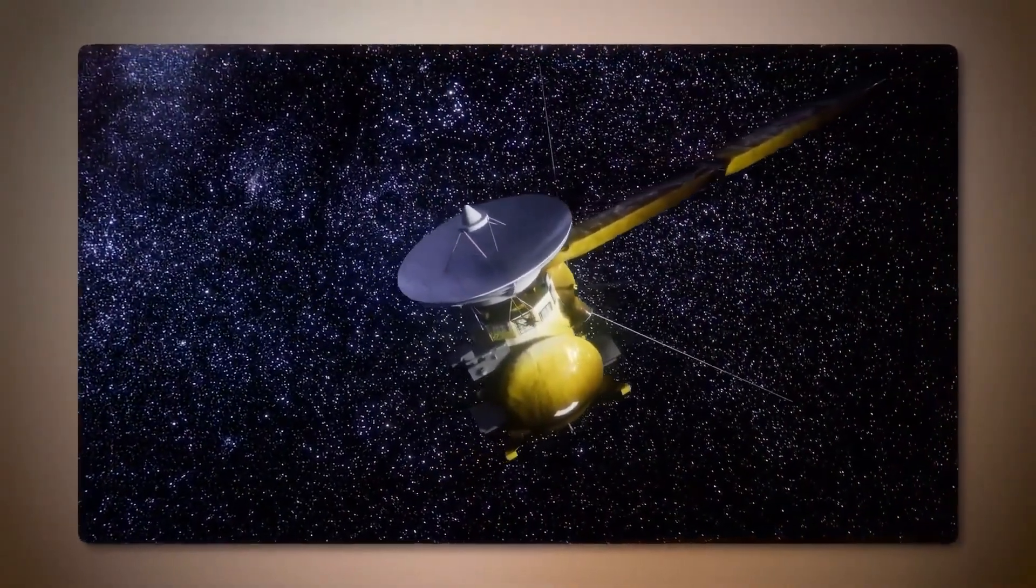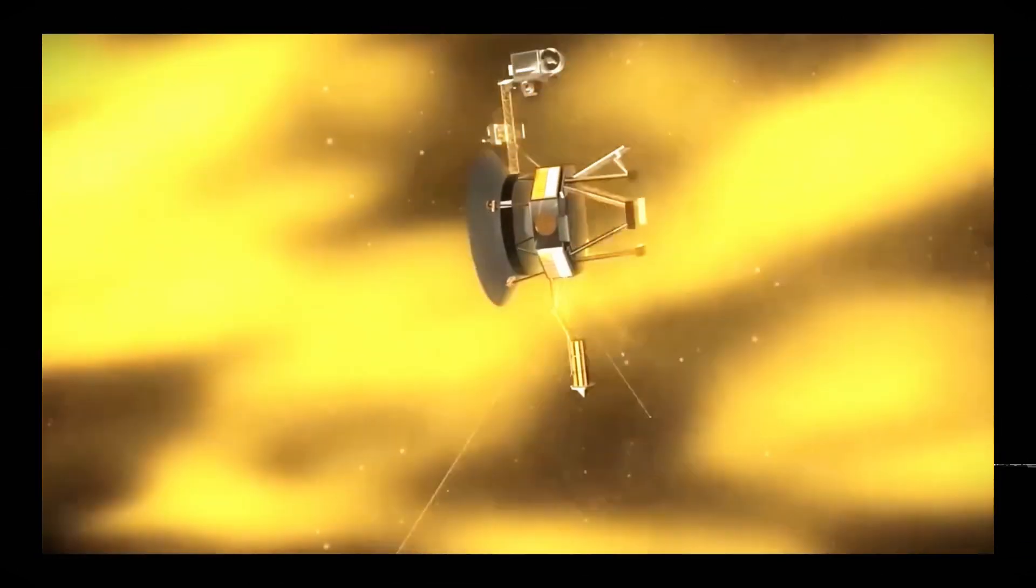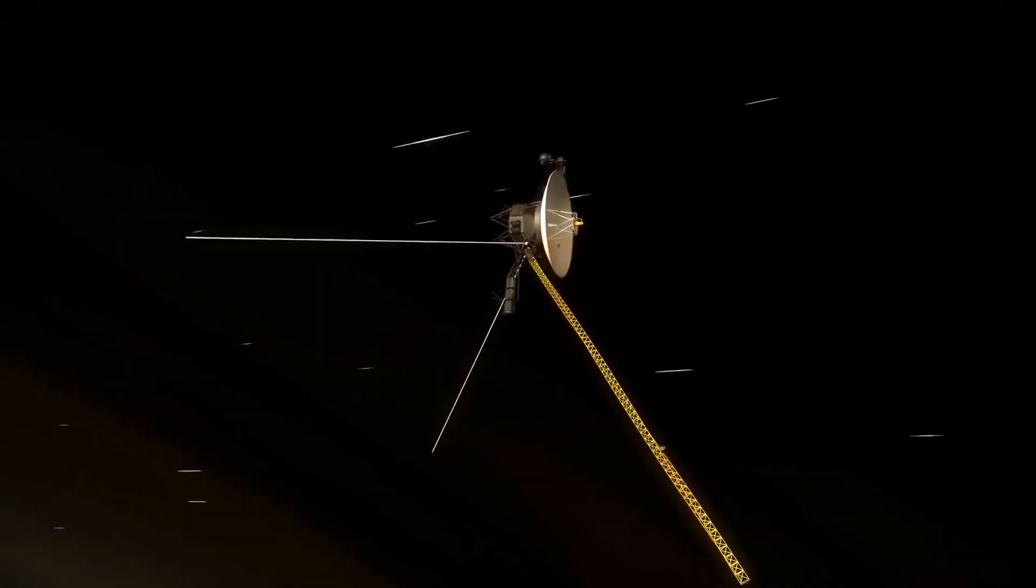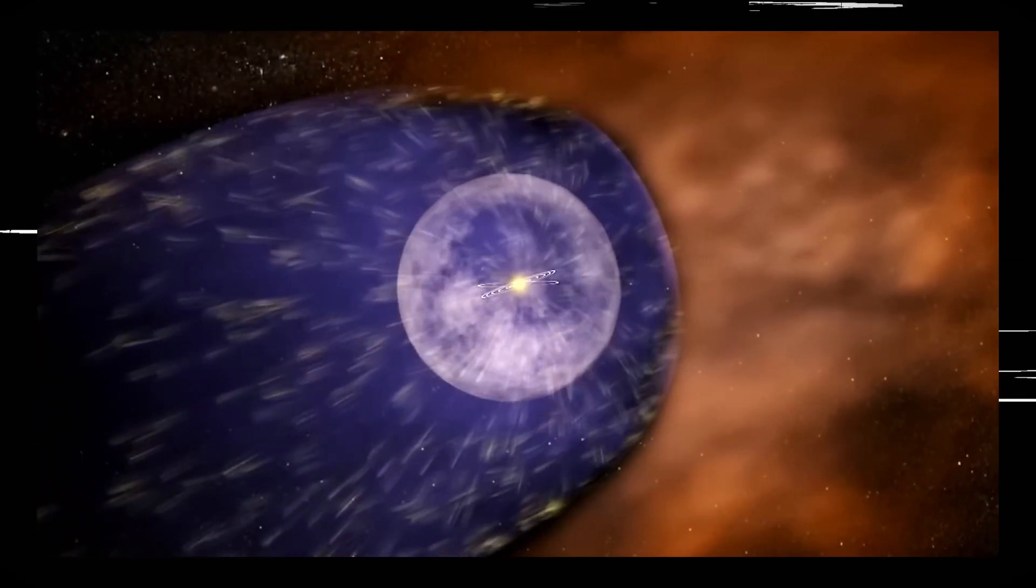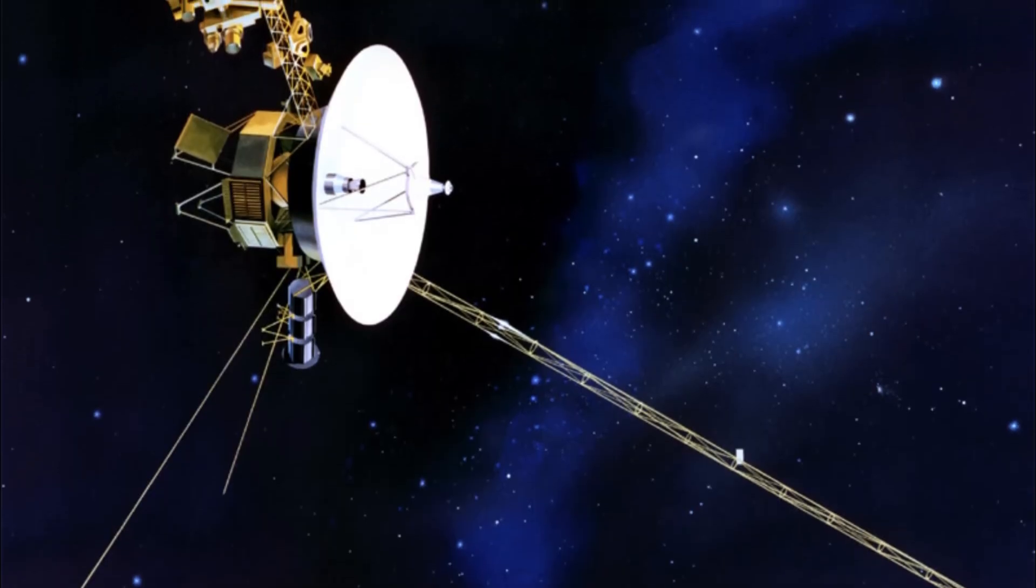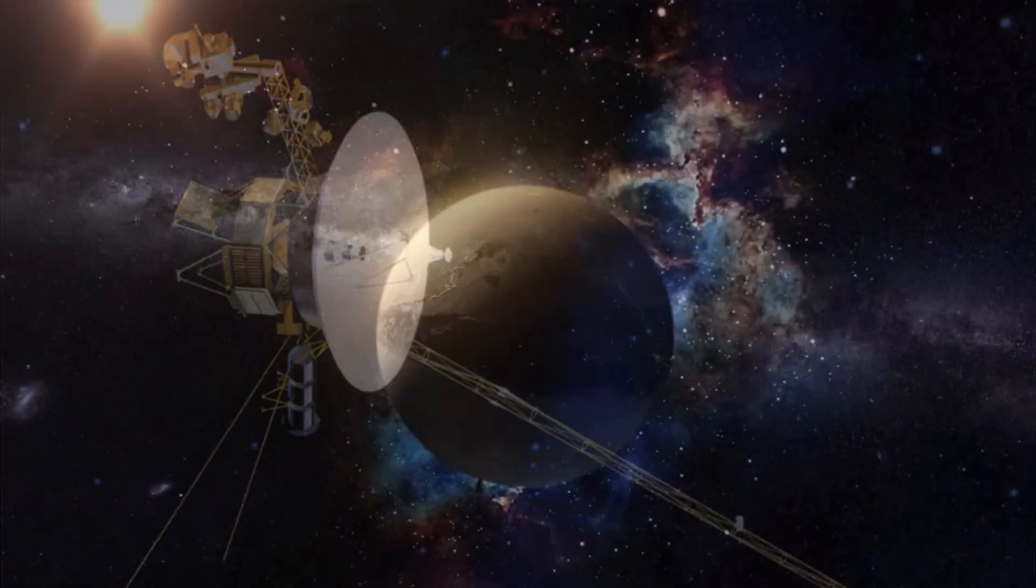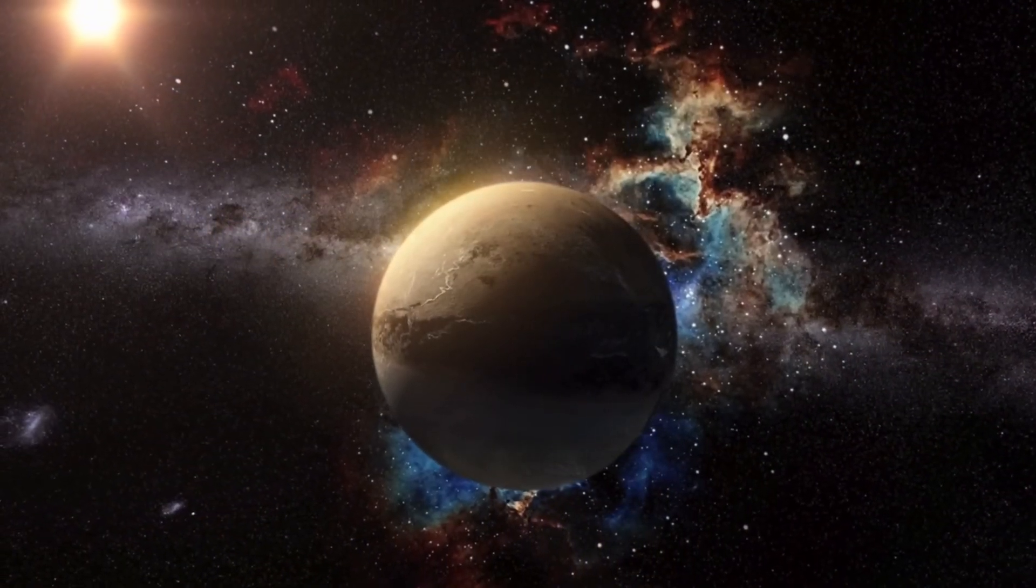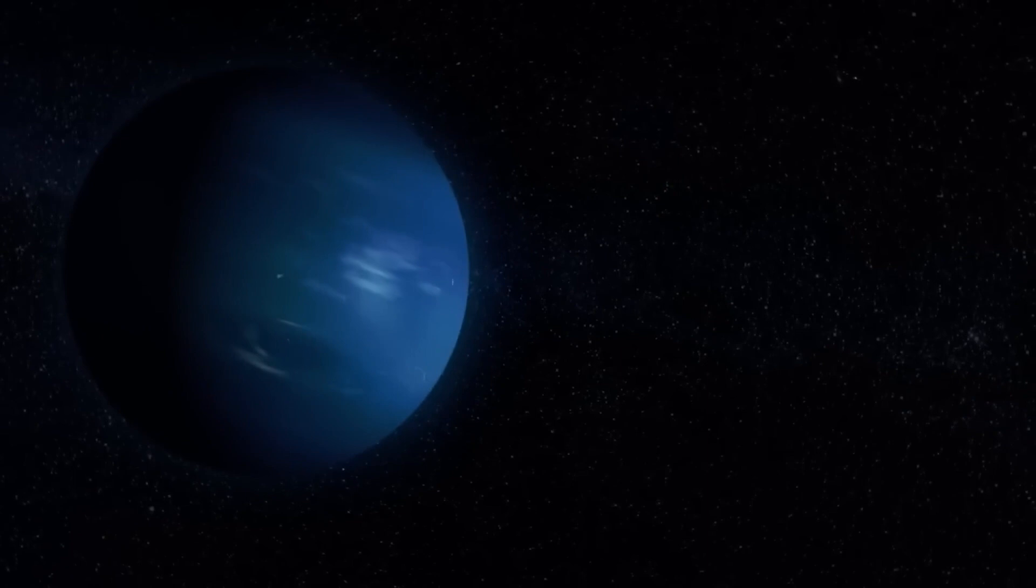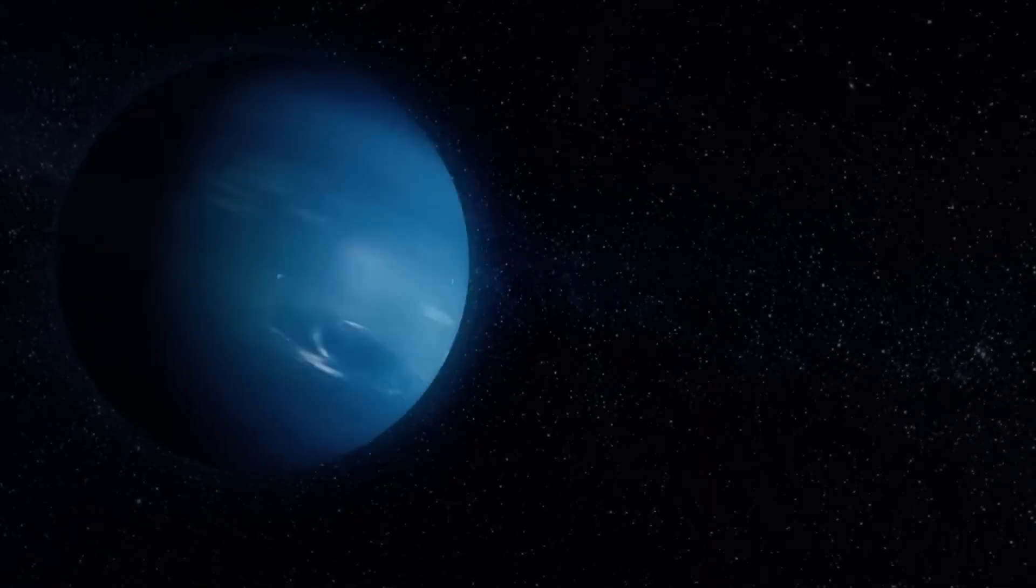Detecting Voyager 1's S-band signal posed a significant challenge given the spacecraft's immense distance and the faintness of its transmission. Using its highly sensitive array of antennas, NASA's Deep Space Network managed to capture the signal, verifying the spacecraft's operational status. However, the S-band system, designed as a backup, lacks the capability to relay detailed telemetry, limiting the mission team's ability to assess Voyager 1's full health and performance.